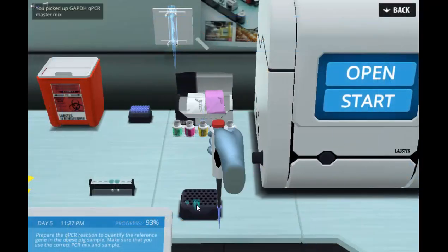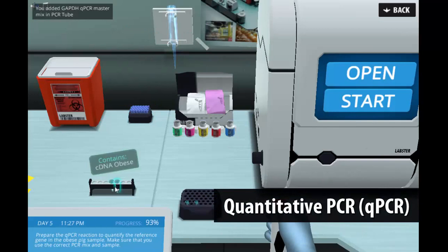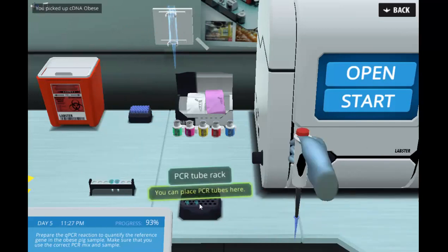After identifying a candidate gene involved in obesity, a quantitative PCR or qPCR experiment needs to be performed to validate the results.